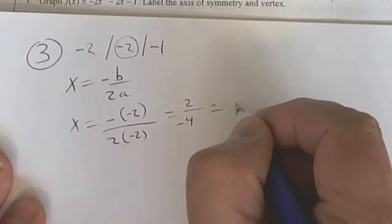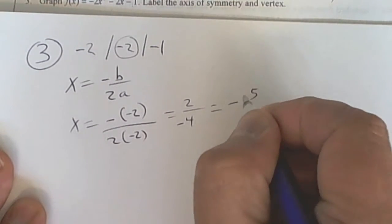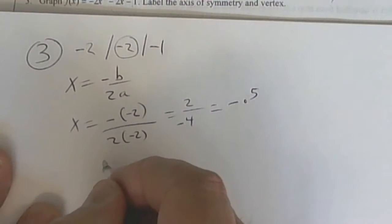So that gives you a negative 0.5. So on your table, you're going to put x equals negative 0.5.